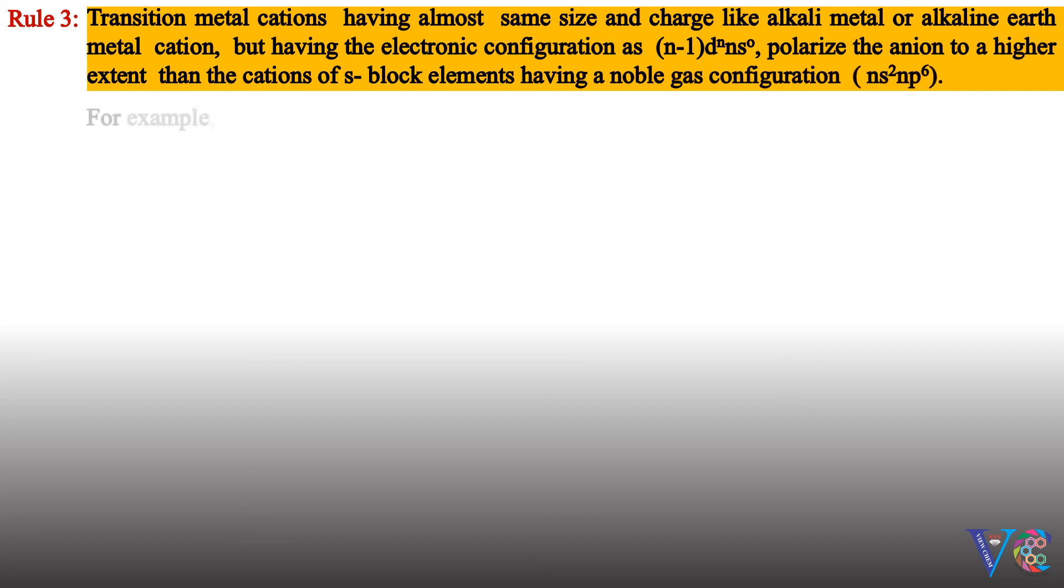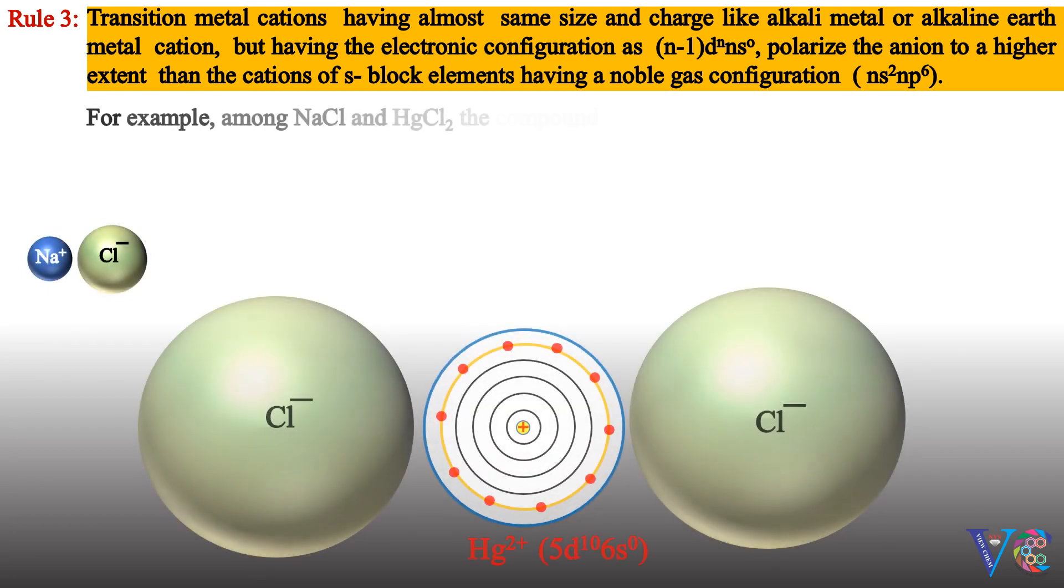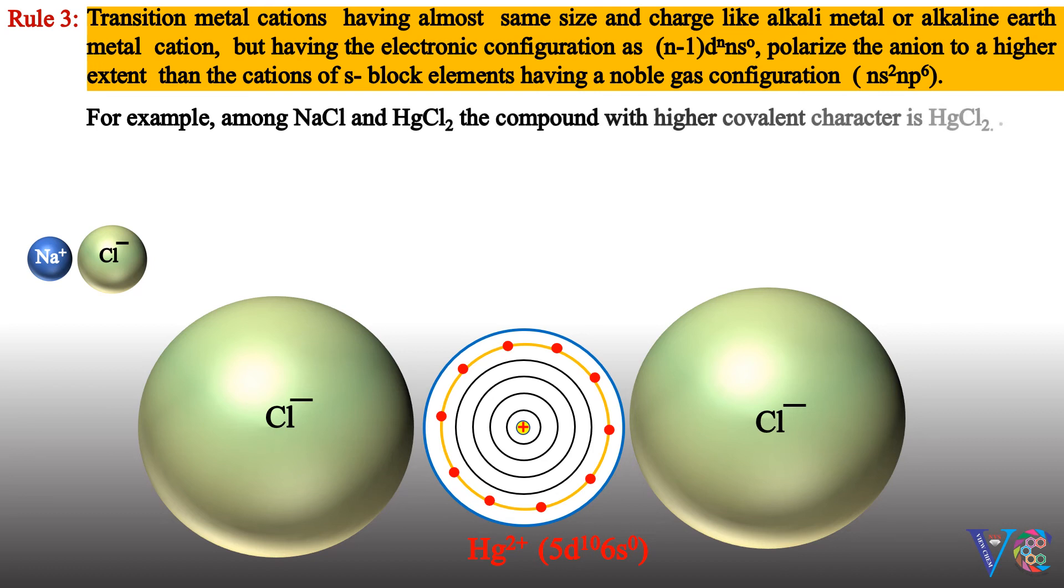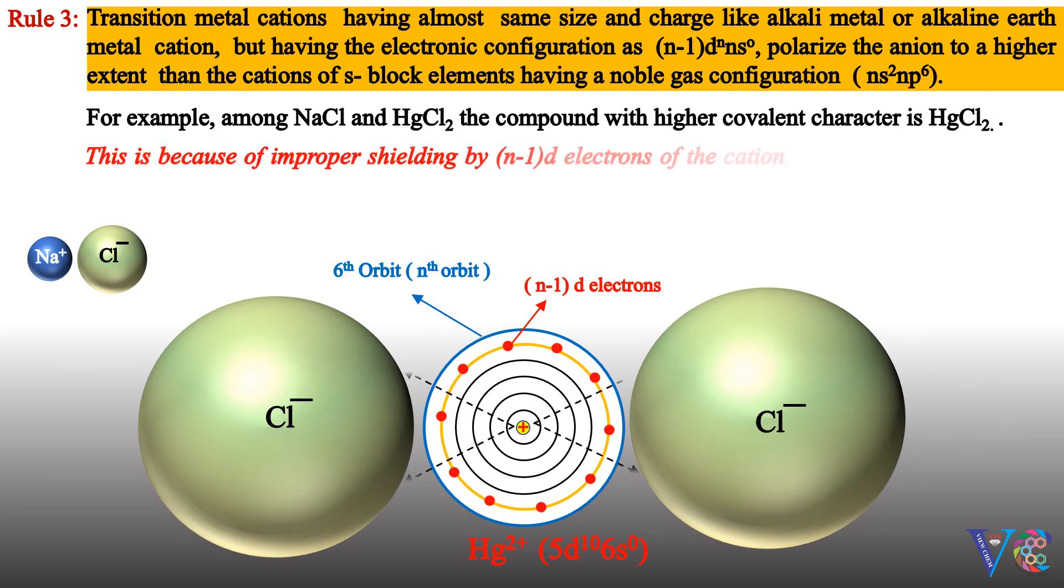For example, among NaCl and HgCl2, the compound with higher covalent character is HgCl2. This is because of improper shielding by (n-1)d electrons of the cation, the polarization of anion will be more.